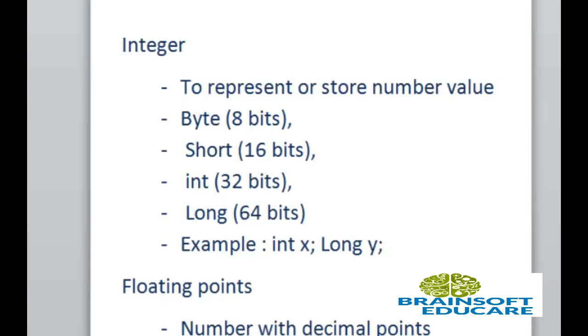Here, this is the example of how to declare integer variable. Here, x is the integer variable. First, you should write the data type and then you can write variable name, then semicolon.